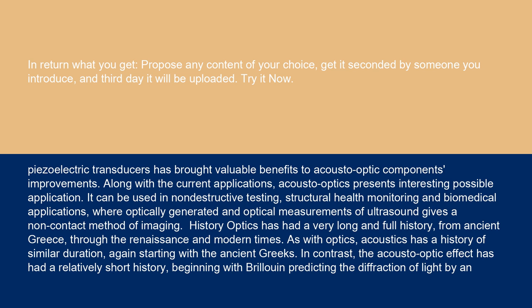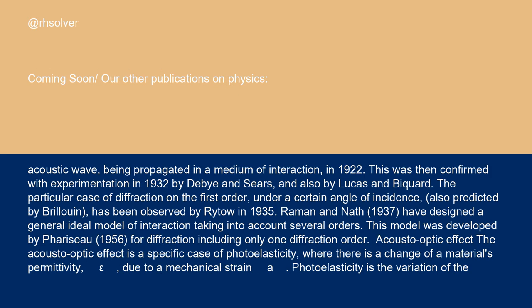It began with Brillouin predicting the diffraction of light by an acoustic wave being propagated in a medium of interaction in 1922. This was then confirmed with experimentation in 1932 by Debye and Sears, and also by Lucas and Biquard. The particular case of diffraction on the first order, under a certain angle of incidence, also predicted by Brillouin, has been observed by Rido in 1935.